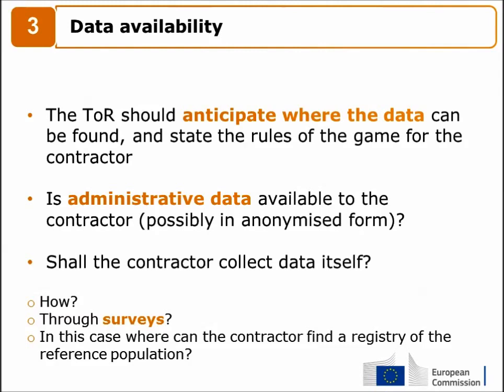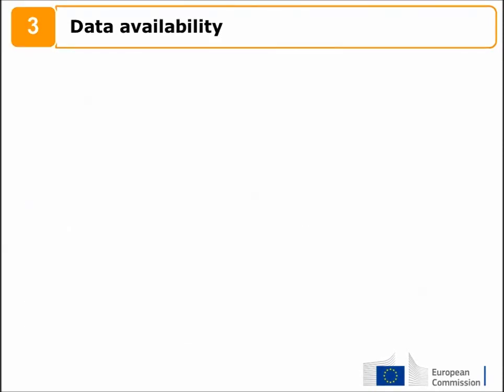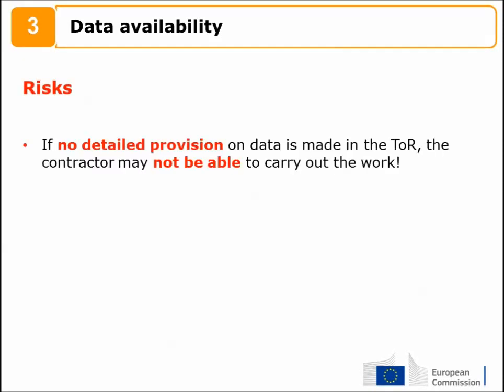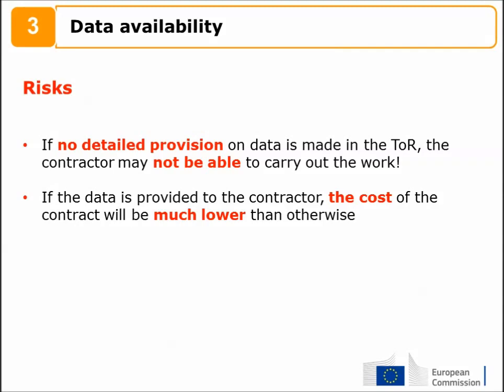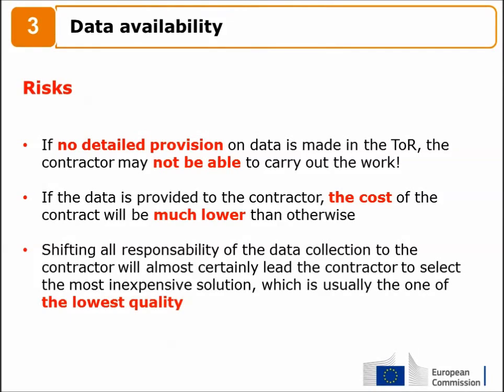For the evaluation of the training program, the contractors could use administrative data on the employment history of participants and non-participants. If these are not accessible, a survey could be used to collect the data, and it should be specified in the terms of reference who will be in charge of running the survey. If no detailed provision on data is made, the contractor may not be able to carry out the work. If the data is provided to the contractor, the cost of the contract will be much lower. Shifting all responsibility of data collection to the contractor will almost certainly lead to the most inexpensive and usually lowest quality solution.